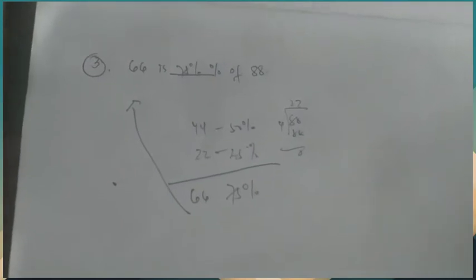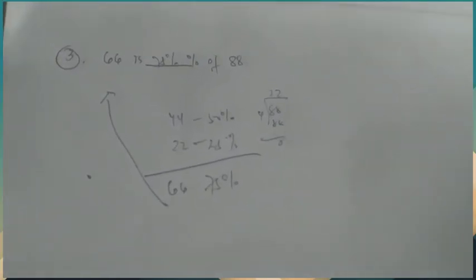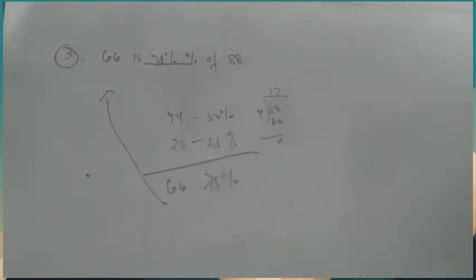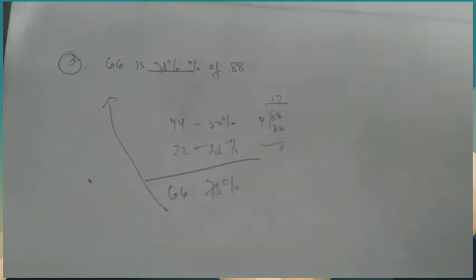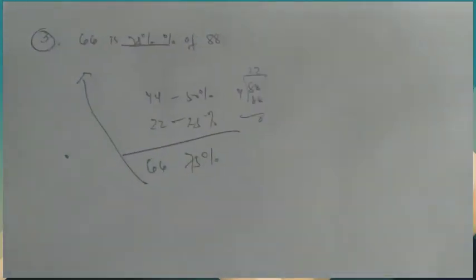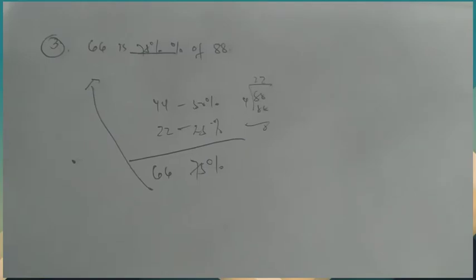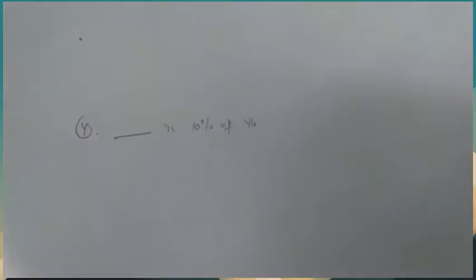75% is the answer. It's that easy. Just remember the three techniques: 50%, 25%, and 20%. Let's give another example. Number 4: blank is 10% of 46.